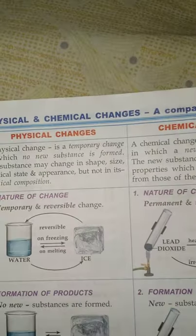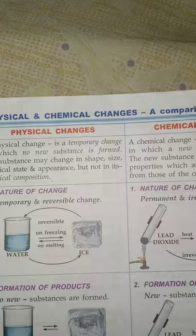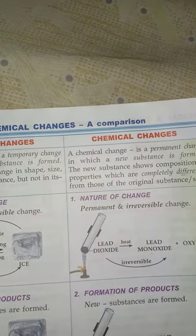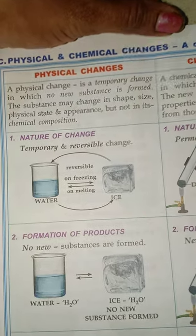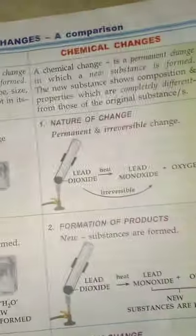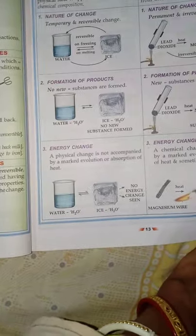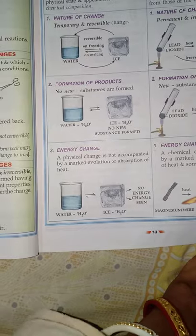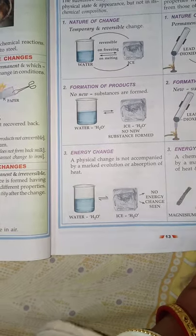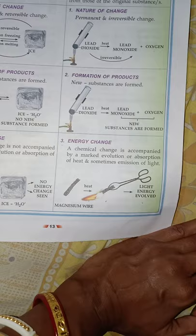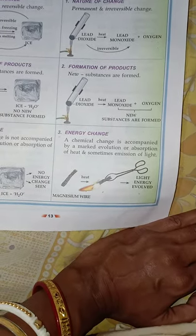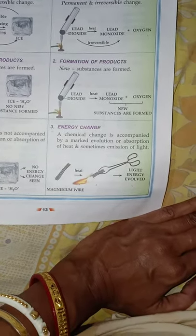When it comes to nature of change, physical change is temporary and reversible, whereas chemical change is permanent and irreversible. In physical change, there is no new formation of products, whereas in chemical change new products are formed. In case of energy, physical change does not involve evolution or absorption of heat, whereas chemical change is accompanied by evolution or absorption of heat, and sometimes emits light also.